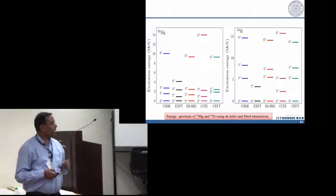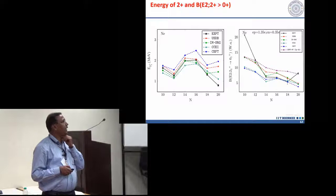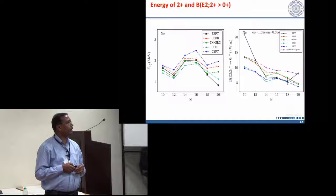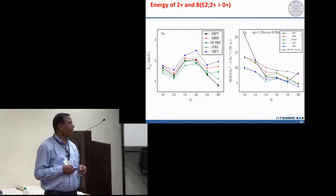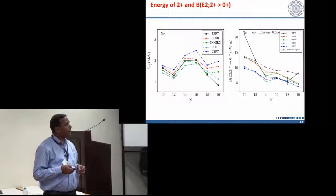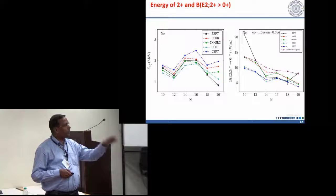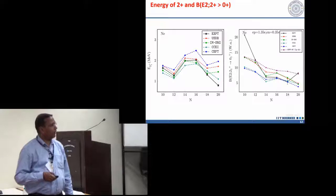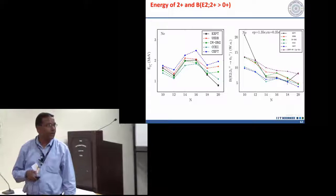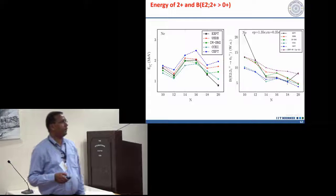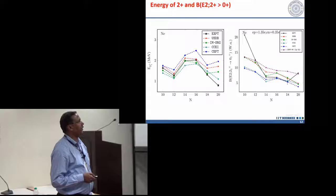If you look at how the 2 plus and B2 are working here, you can see how the ab initio interactions are giving very good result. But once you go to N equal to 20 regions, our result is slightly far from that. Later I will show you if you include the SD PF shell, how it is going to work.